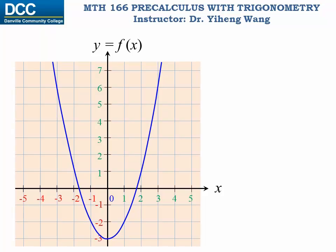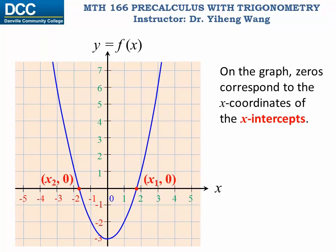For the graph of a function, if you recall, we learned about the x-intercepts, which are points where the function graph intercepts with the x-axis. And these points will always have y-coordinates of zero, which indicates a function value of zero. Therefore, naturally, on the graph, zeros for the function correspond to the x-coordinates of the x-intercepts. In this case, x1 and x2 are the zeros for this function.